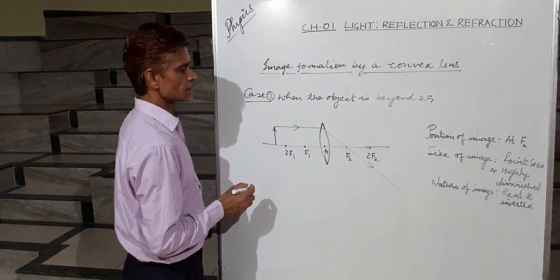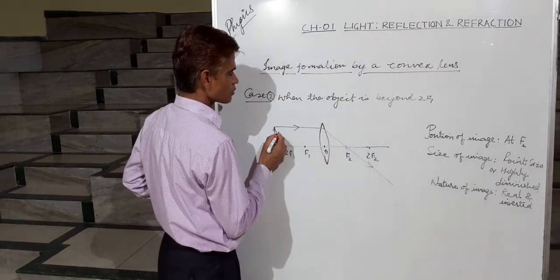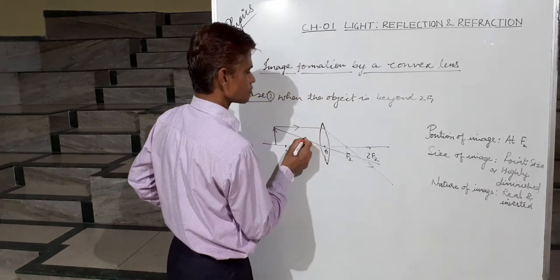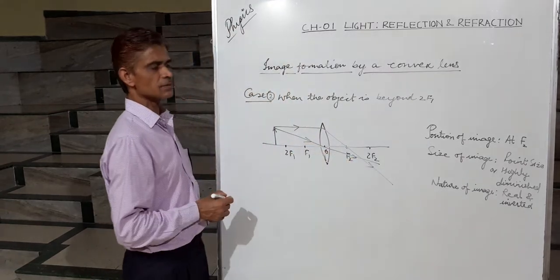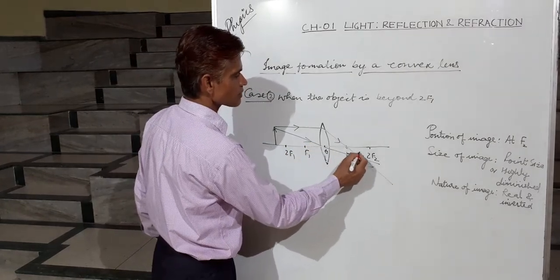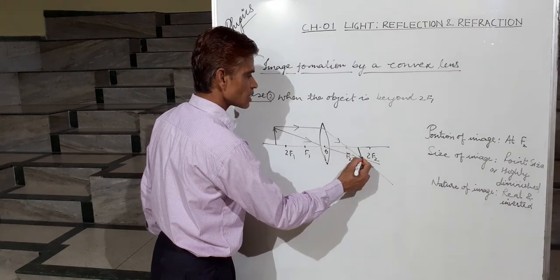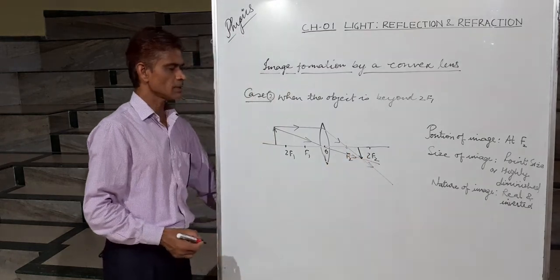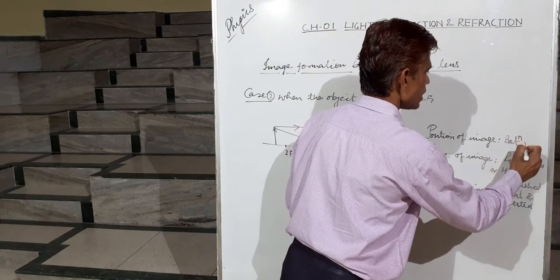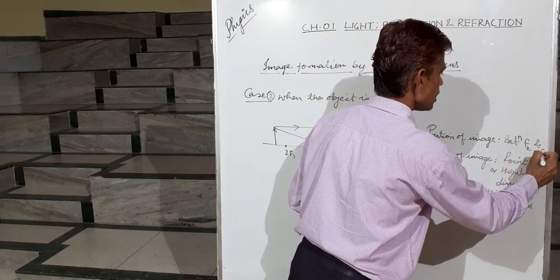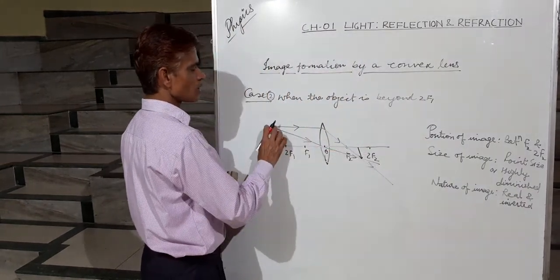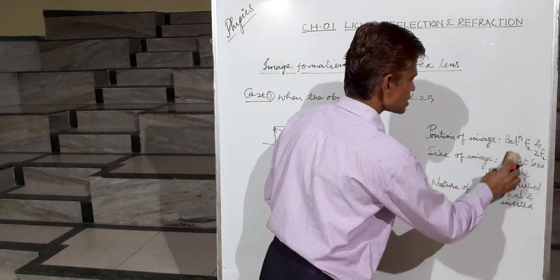We can take another ray through the optical center. This ray will go as it is without deviation. We observe that these rays meet at a point, so the image is formed between F2 and 2F2. Position of image: between F2 and 2F2.